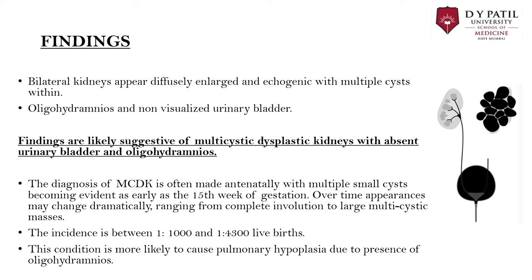The diagnosis of multicystic dysplastic kidney is often made antenatally, with multiple cysts becoming evident as early as the 15th week of gestation. Over time, appearances may change dramatically, ranging from complete involution to large multicystic masses. Incidence is between 1 in 2,000 and 1 in 4,300 live births. This condition is more likely to cause pulmonary hypoplasia due to the presence of oligohydramnios.